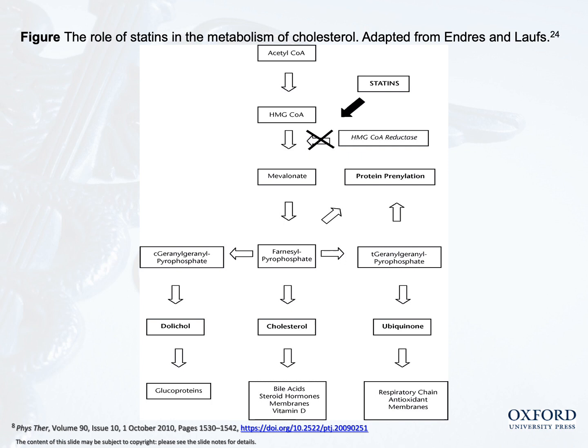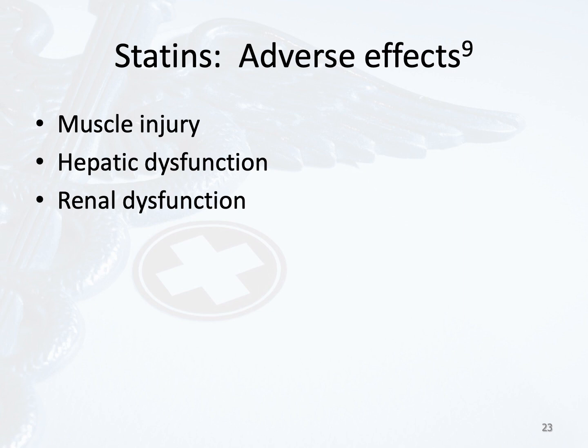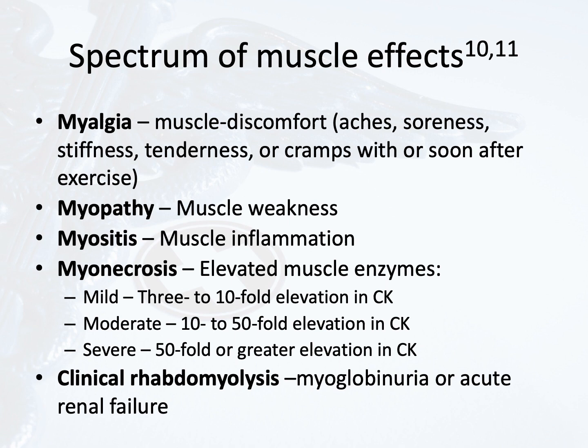Statins work by blocking the enzyme HMG coenzyme A reductase, which is important in the pathway for cholesterol production. By blocking this enzyme, cholesterol production is inhibited. The adverse effects of statins begin with muscle injury, and as muscle is broken down and metabolized by the liver and excreted by the kidney, both hepatic and renal complications can occur. We will focus specifically on the effects of statins on skeletal muscle.